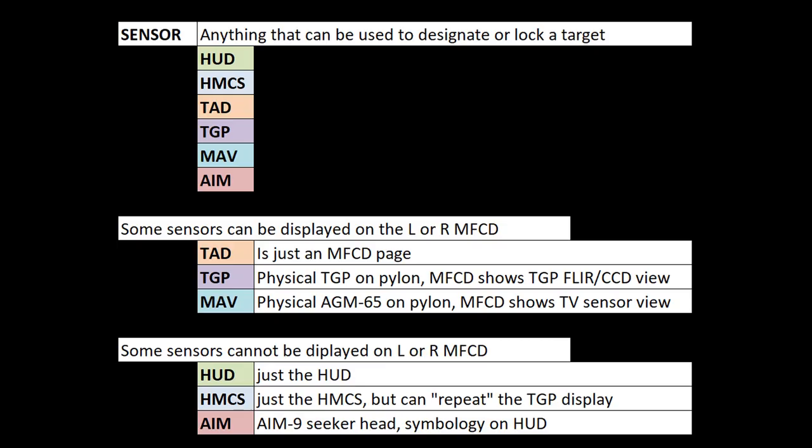To start with, we need to talk about sensors, which are the foundation of employing the A-10's weapons. What are sensors? This is a layman's definition, but anything that can be used to designate or lock a target — which includes those things in the list. Some sensors are physical things that can be displayed on the MFCDs, and some of them are just things in the HUD or things on the plane. It gets a little confusing, but it'll make more sense as time goes on.